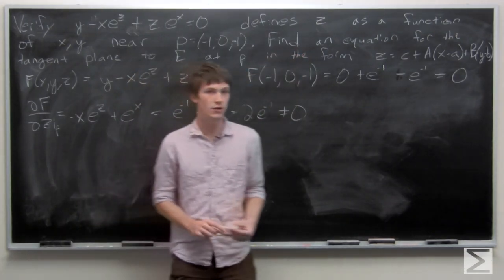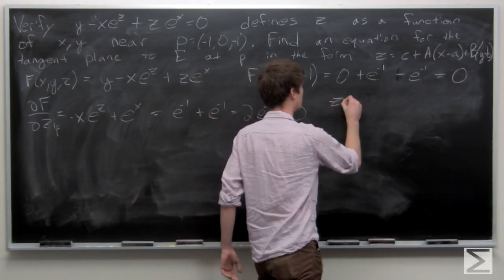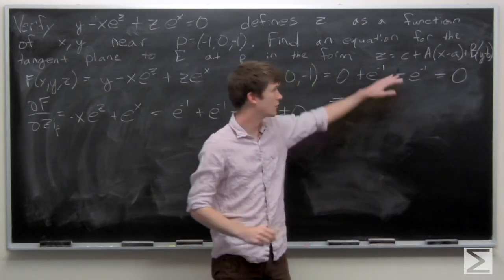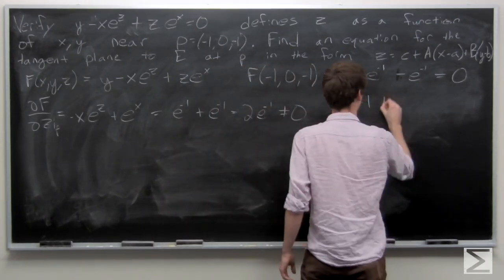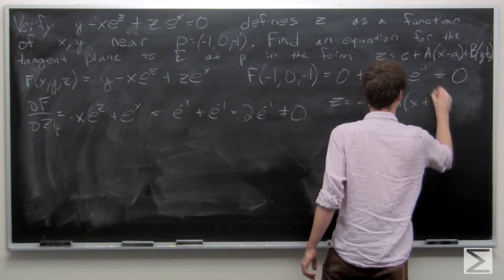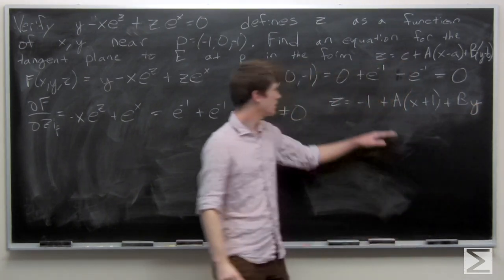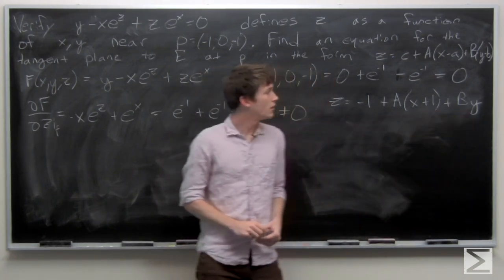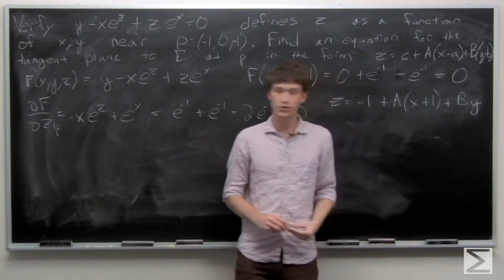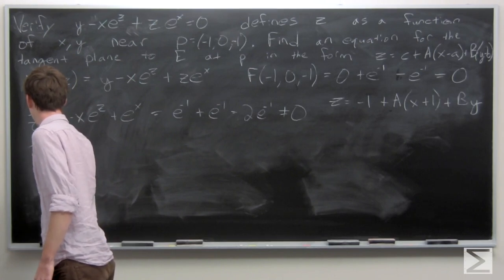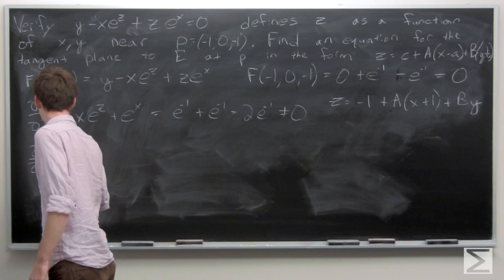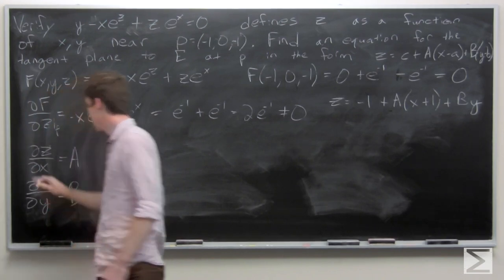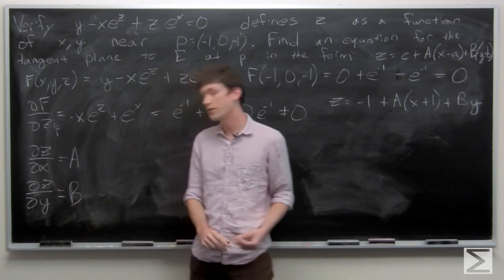Now we want to find an equation for the tangent plane. Our lowercase a, b, and c correspond to the x, y, and z coordinates of point p, so we have z equals negative 1 plus a·(x plus 1) plus b·y. We want to find a and b, which are the partial derivatives ∂z/∂x and ∂z/∂y respectively, both evaluated at point p.